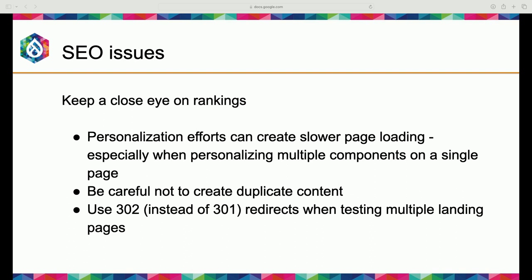One good way to offset that is using a content delivery network — you can offset the speed impact somewhat. It's not perfect but it's something. If you're getting into personalization, don't take your eyes off your SEO rankings if they're important to you. Be careful not to create duplicate content — a big SEO no-no. And make sure if you have multiple landing pages you're using 302 redirects instead of 301 redirects.